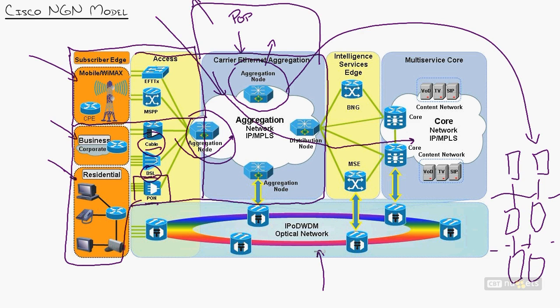How do they get there? Through SONET and DWDM. We're not going to get into all the gory detail in this nugget — that was part of the SPNGN1 course. Just think of it as a big redundant fiber optic network where the bandwidth is virtually unlimited because you're using DWDM technology — dense wavelength division multiplexing. Compared to TDM — time division multiplexing — something we've been using for decades on T1 lines and E1 lines.